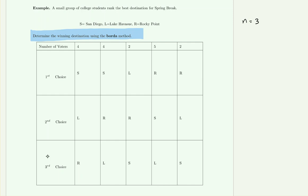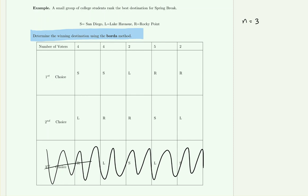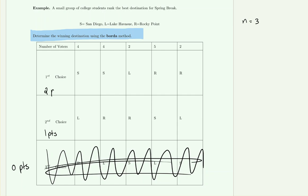Last place gets zero points because it's not really a preference — you just have to place someone last. Third place here is last, so all those cells contribute zero points. As rankings increase, add one point per level: second place gets one point per vote, and first place gets two points per vote. This matches the formula: three minus one equals two, three minus two equals one, three minus three equals zero.